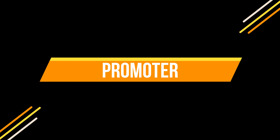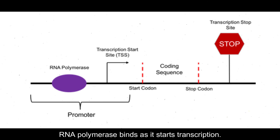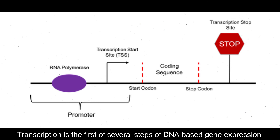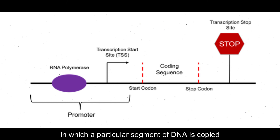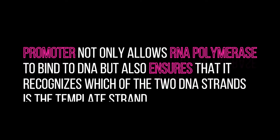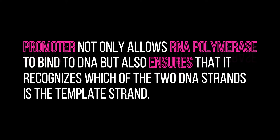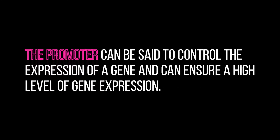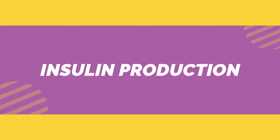The fifth tool is promoters. A promoter is a region of DNA to which RNA polymerase binds as it starts transcription. Transcription is the first of several steps of DNA-based gene expression, in which a particular segment of DNA is copied into RNA by the enzyme RNA polymerase. The promoter not only allows RNA polymerase to bind to DNA but also ensures that it recognizes which of the two DNA strands is the template strand. The promoter can be said to control the expression of the gene and can ensure a high level of gene expression.